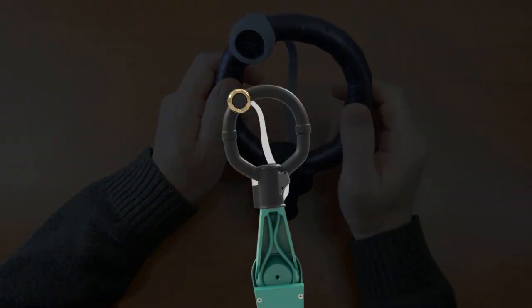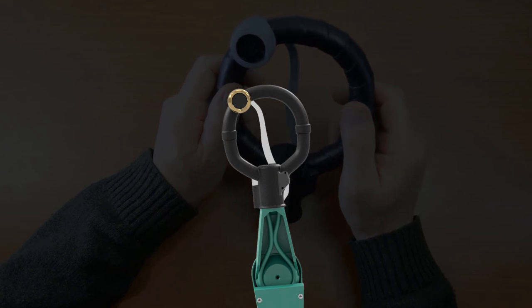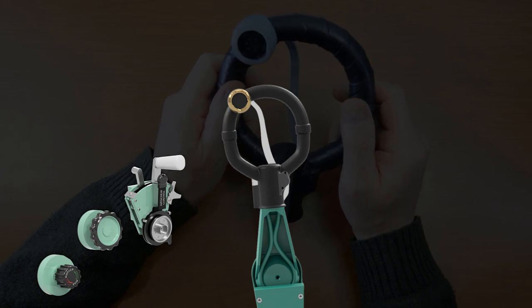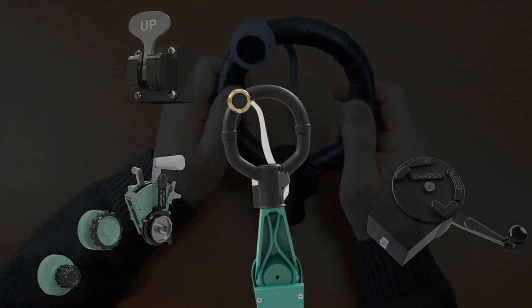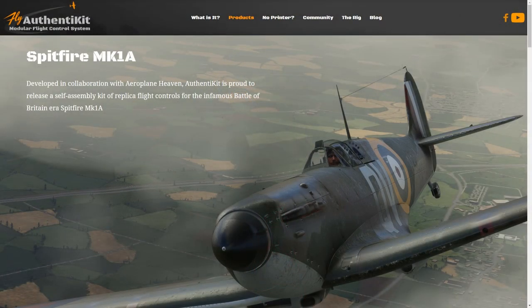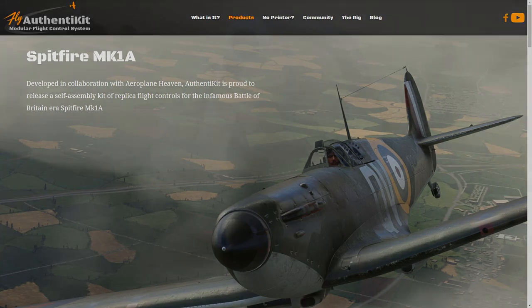As well as this kit, there are also the following kits in the Mk1a series. There's the throttle quadrant and trim wheels for elevator and rudder. There's the flaps lever. And coming soon, we have the chassis or the gear lever. In the description below, I've shown a link to the Spitfire Mk1a page on the Authentikit website, where you can download the assembly instructions, as well as the parts list, and all the files, and all the information you need, and it's all free.